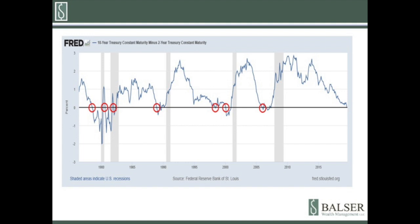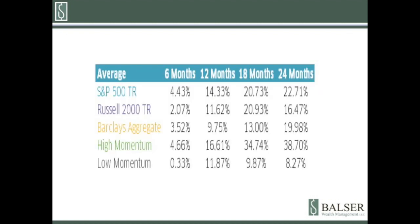Each inversion is different, so it's also informative to look at each one individually. When the yield curve first dips below zero, I mark that date and look at the performance of several indexes over the next 6, 12, 18, and 24 months. I use the S&P Total Return Index for large cap stocks, the Russell 2000 Total Return Index for small cap stocks, the Barclays Aggregate Bond for fixed income, and two indexes representing high and low momentum stocks. The momentum indexes come from the Ken French data library.